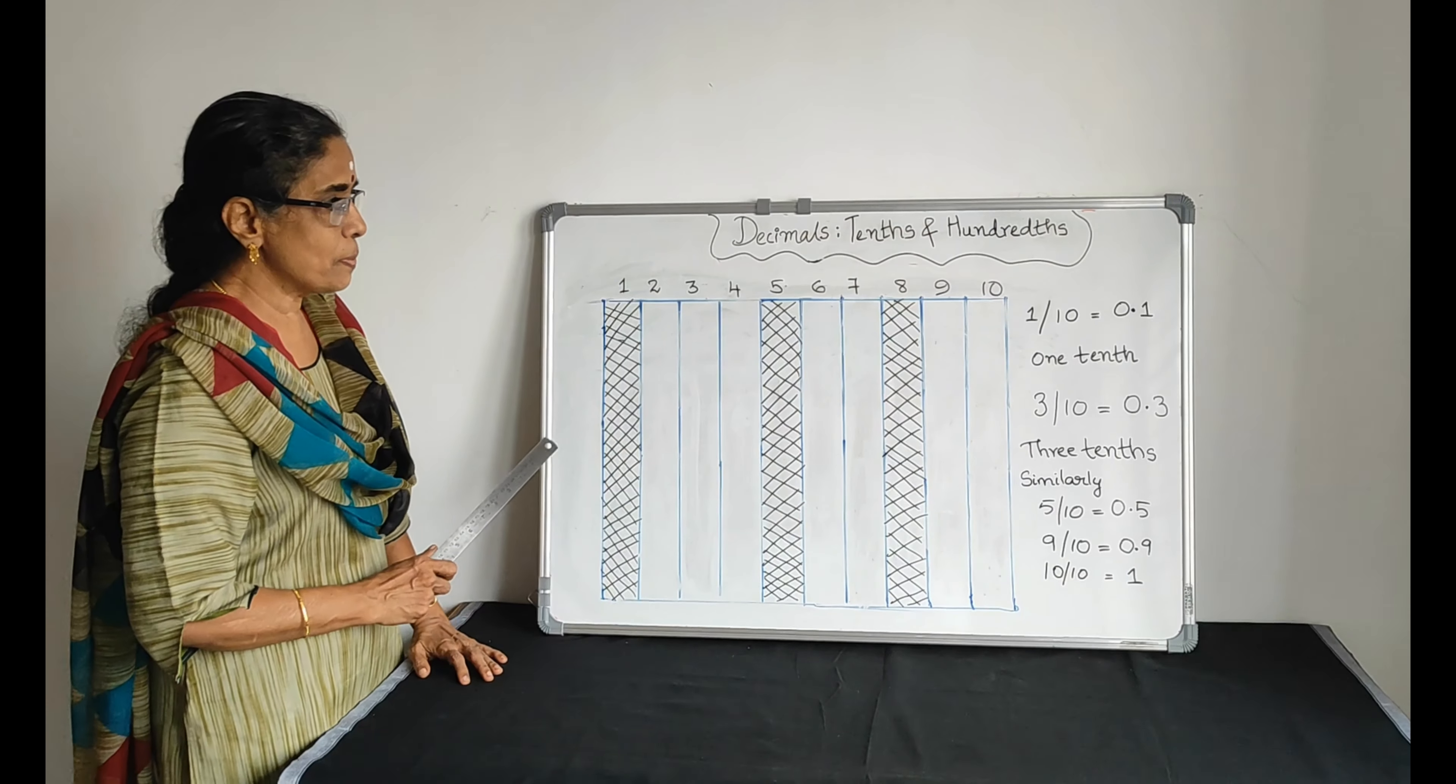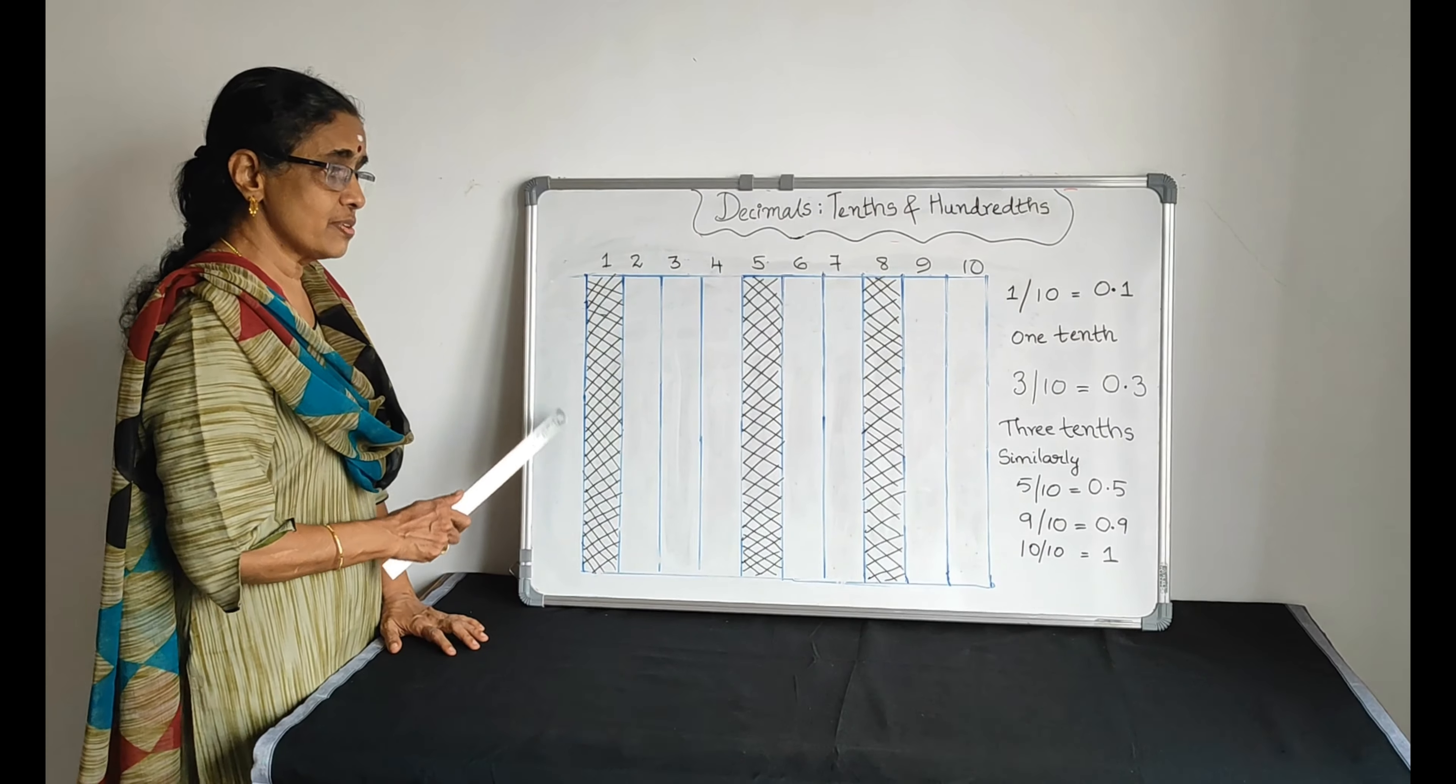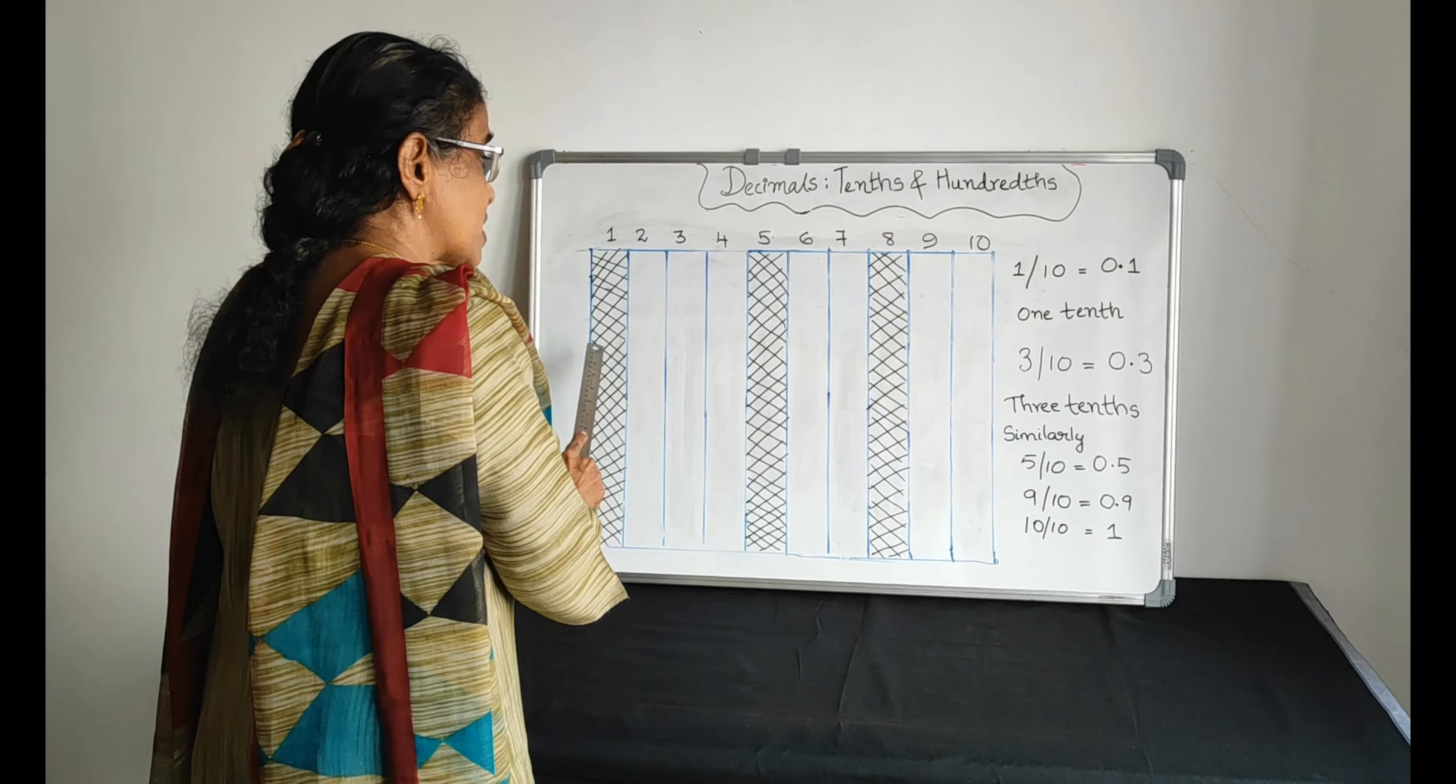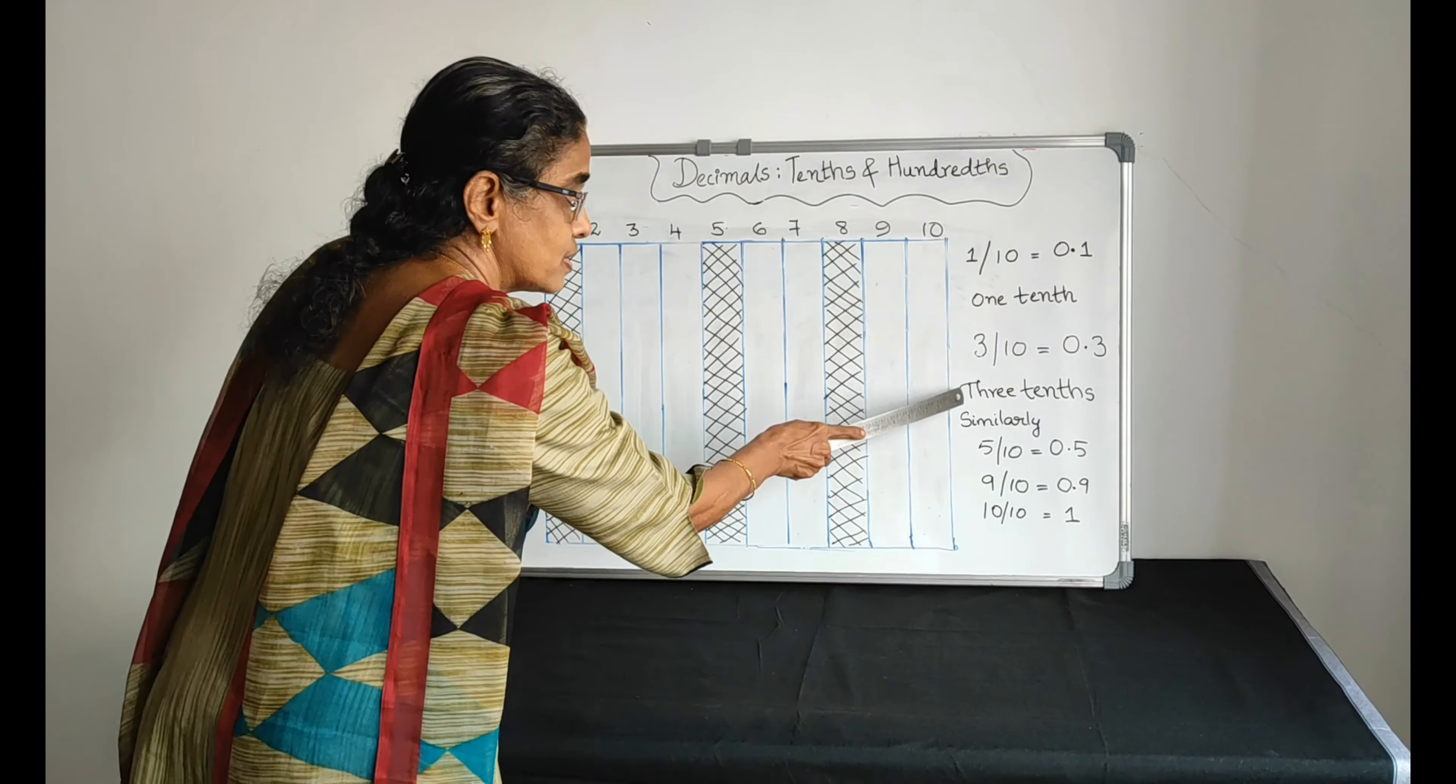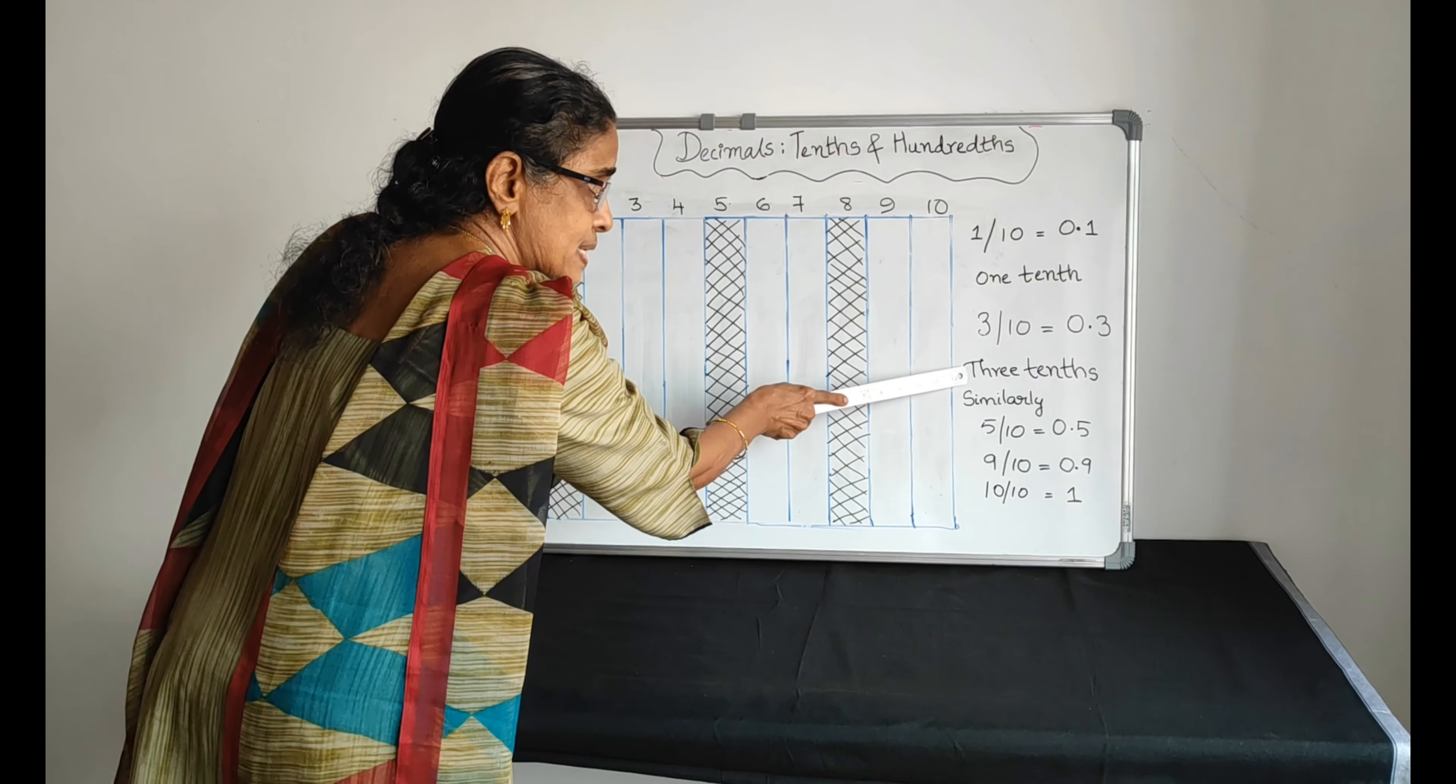Here how many parts are shaded? One, two, three. Totally here we have shaded three parts. That means three by ten. It represents 3/10, which is equal to 0.3. Three tenths. Zero point three. How to write in words? Three tenths.